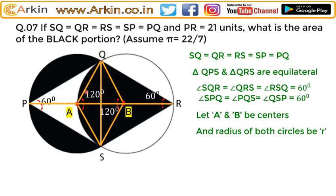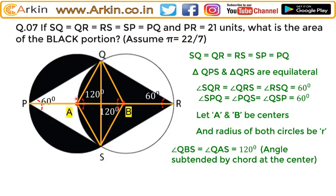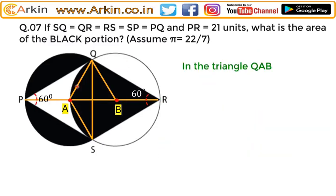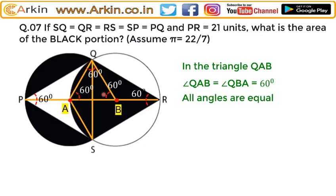This angle will be 120 degrees — because this chord is subtending 60 degrees here, it will subtend 120 degrees at the center; that is the property of the circle. Similarly, this angle will also be 120 degrees. Since these two triangles are congruent, this will be 60 degrees and this will also be 60 degrees. So this triangle will be an equilateral triangle again — 60, 60, 60.